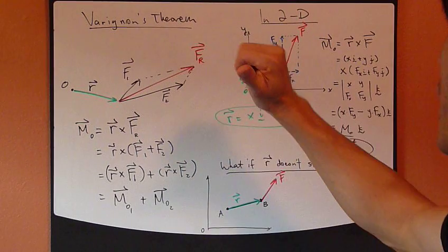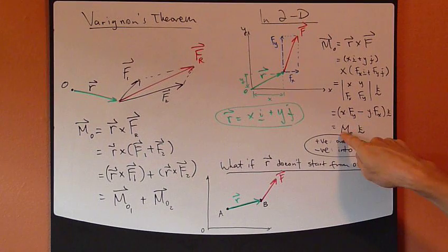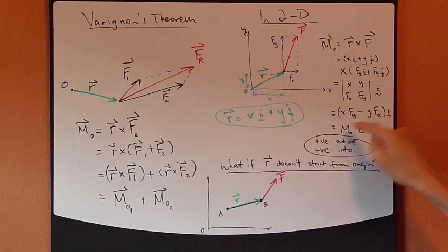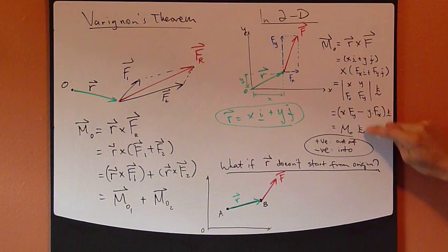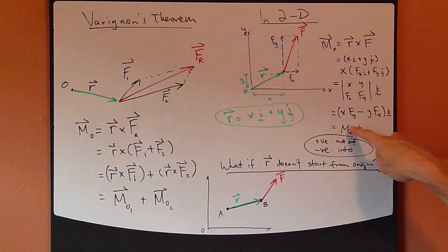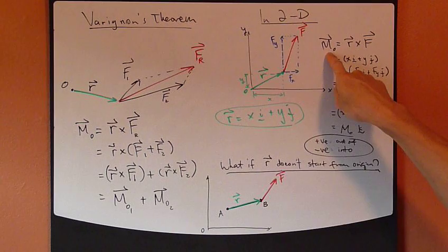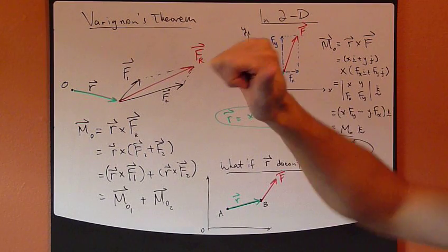So K direction, positive K is going out this way. So if M-naught, whatever it is, it's a number now, right? Because this is the scalar M-naught. If this scalar M-naught is positive, this means that this moment vector is coming out of the paper or out of the board.